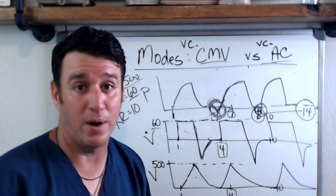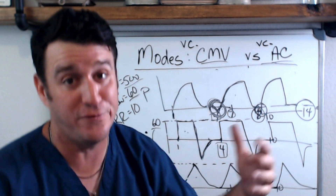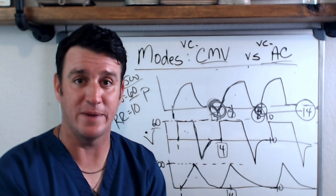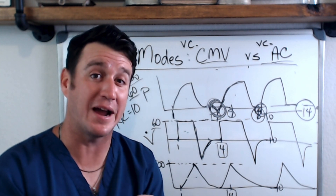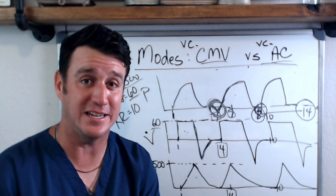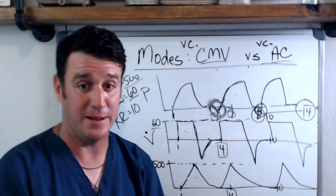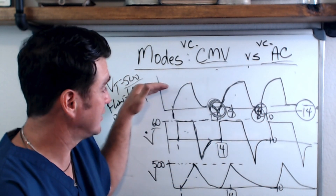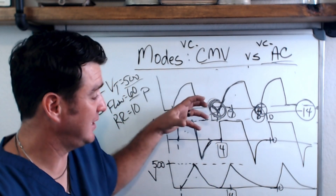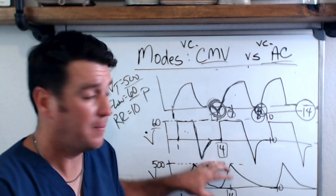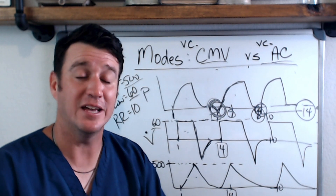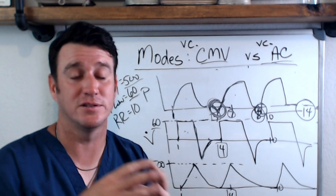That's a breakdown of CMV versus AC. The next video will break down SIMV and compare it to AC — VC-SIMV versus VC-AC. We'll also come back to talk about pressure control: PC-CMV and PC-AC follow the same concepts, except you control pressure and I-time, flow is decelerating, and volume will vary instead of pressure.